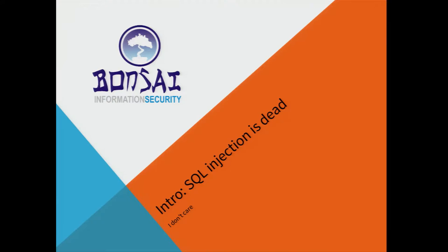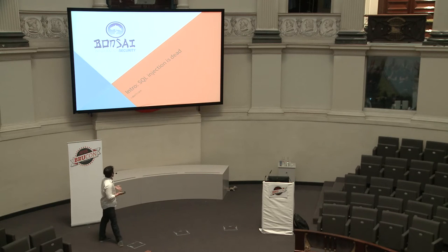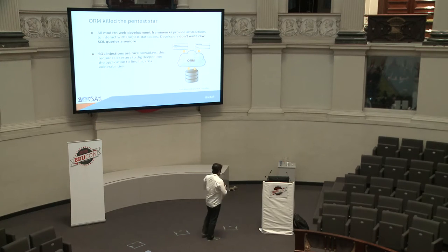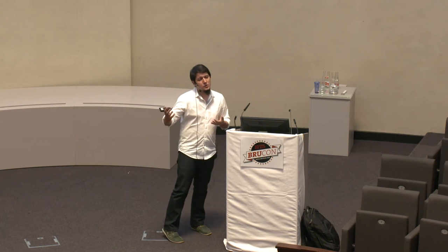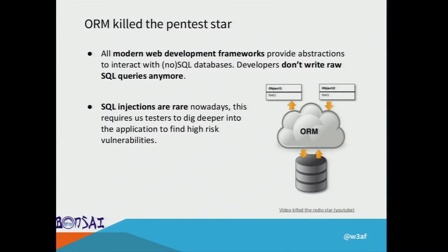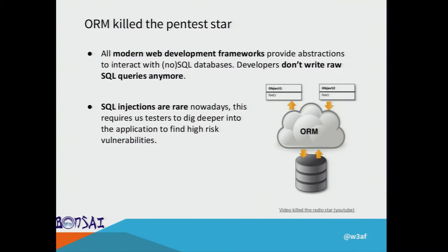Let's first try to understand why these complex vulnerabilities are important. SQL injection is going to die soon. Frameworks like Ruby on Rails, Django, and many others are all using ORMs. So if you're a developer coding a new application, you're not going to be writing a SELECT statement on your own — you'll use something like object.select or object.find. It's very difficult to have SQL injections when using ORMs, so they are becoming rare.